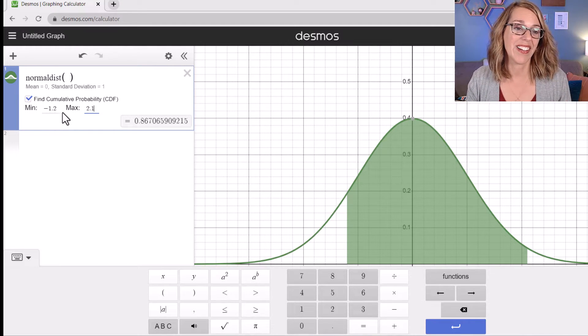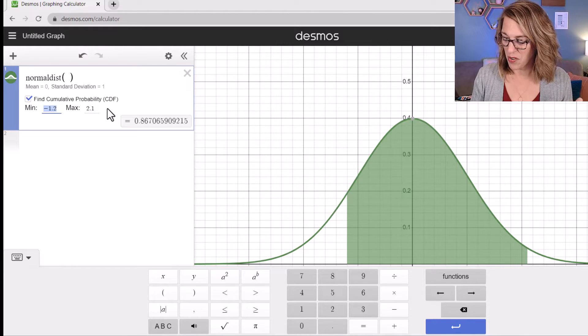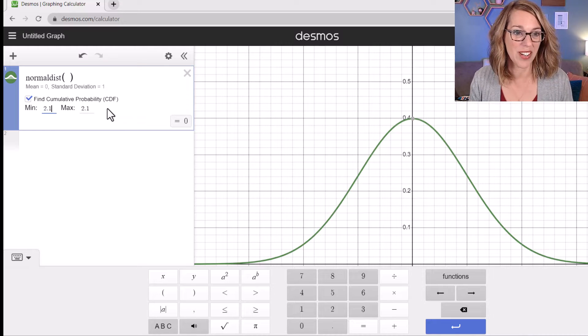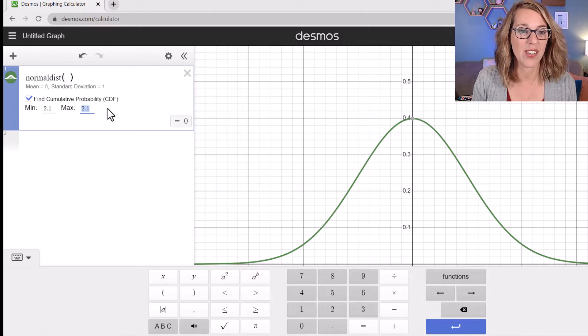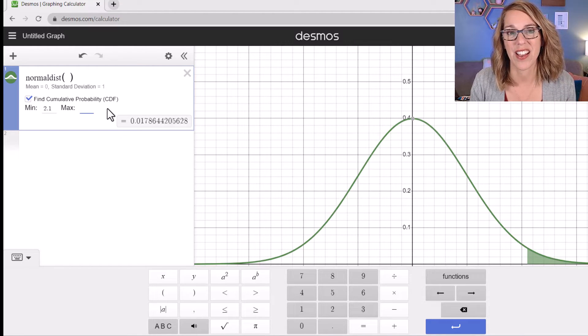I can even do it in a tail, either a right tail or a left tail. So let's say that we wanted to go 2.1. And I wanted to go to infinity here. If you wanted to get infinity in there, you can just delete what you've got there. And then it gives you the area of that tail.